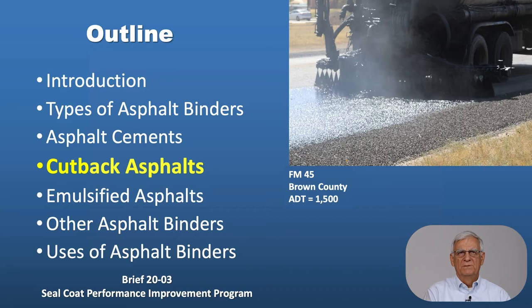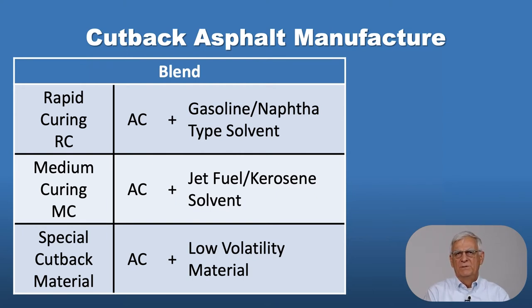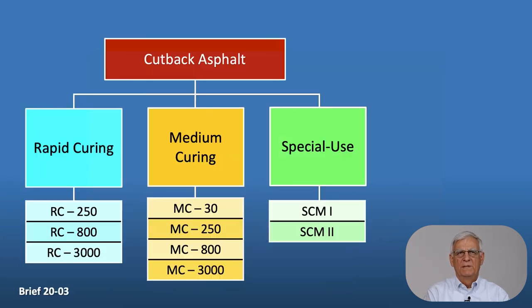Cutback asphalt: we have three types — rapid curing, medium curing, and special cutback materials. The rapid curing materials are made with a gasoline or naphtha type of solvent. The medium curing materials are made with jet fuels or kerosene types of solvents. The special cutbacks are made with even lower volatility material. Medium curing cures out slower than the rapid curing, since gasoline evaporates to the atmosphere faster than jet fuel or kerosene, giving us the curing conditions we're after for certain applications.